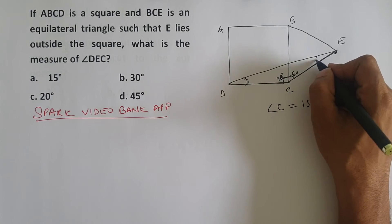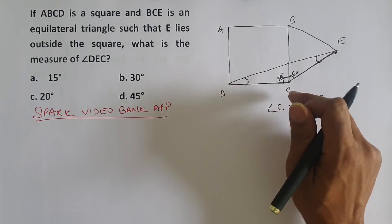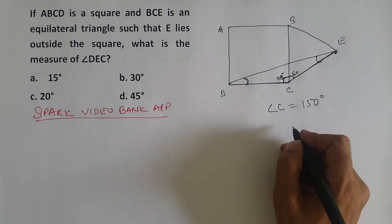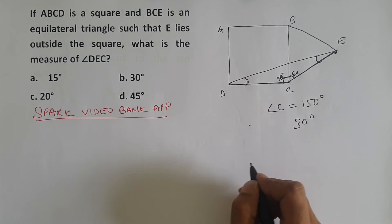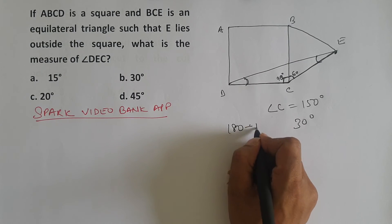So this angle is equally distributed because it is an isosceles triangle. Toh matlab, 150 se 30 degrees is left. 180 minus 150 equals 30 degrees.